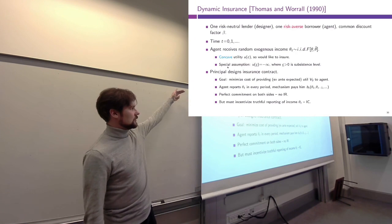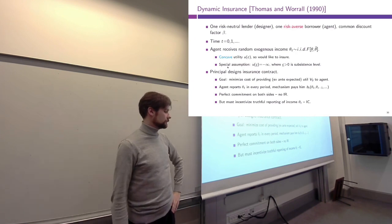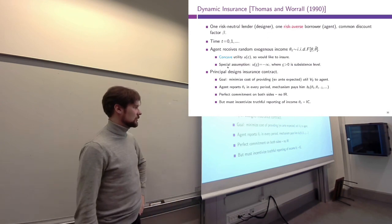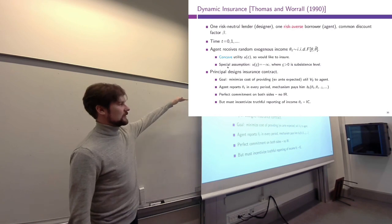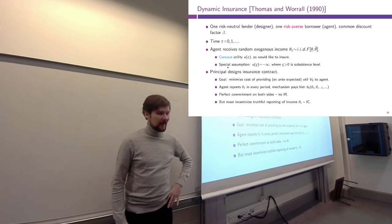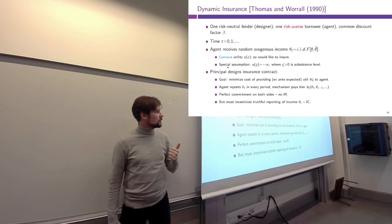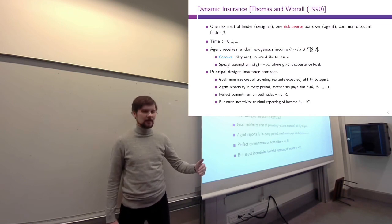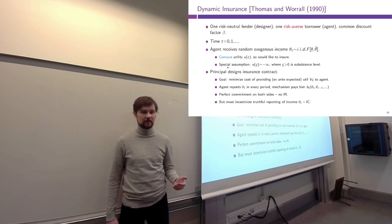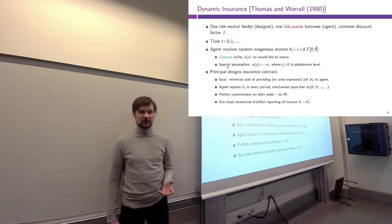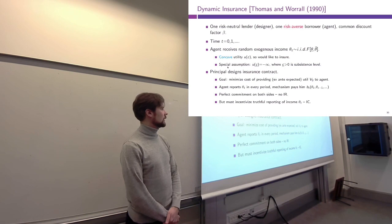One slightly non-standard assumption is a subsistence level of consumption c-bar, below which the agent can never fall. We assume that utility for consumption at or below c-bar is negative infinity, so neither the government nor the agent wants to be there. You can interpret this subsistence level as the minimal amount of food, water, and basic shelter — without those, the agent quite literally dies, receiving negative infinity utility.